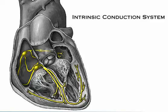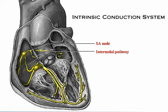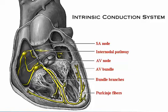This diagram shows the location of the auto rhythmic, or nodal, cells of the intrinsic conduction system. Here we see the SA node, internodal pathway, AV node, AV bundle, bundle branches, and Purkinje fibers.